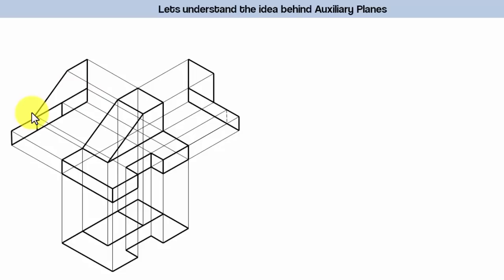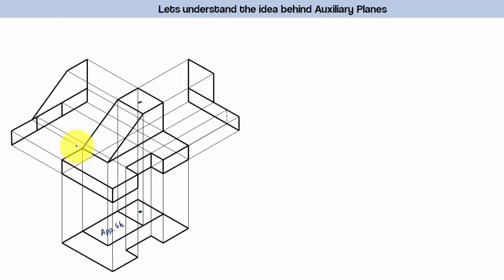The idea behind orthographic projection is that it should provide the true shape and size of the object from the front, top, and side. When you look at this object from the top, this portion and this portion are clearly visible — their true shape and size are visible. But this slanted rectangle — let's call its corners one, two, three, four — its true shape is not visible. What you see instead is its apparent shape, both in the top view and in the side view.